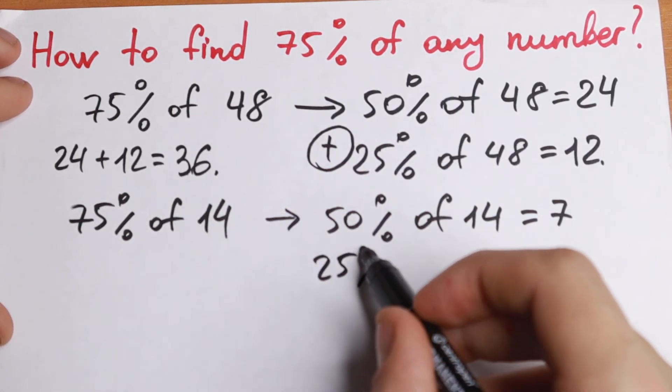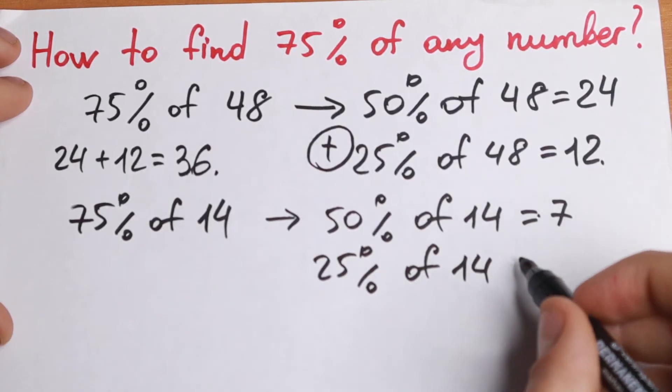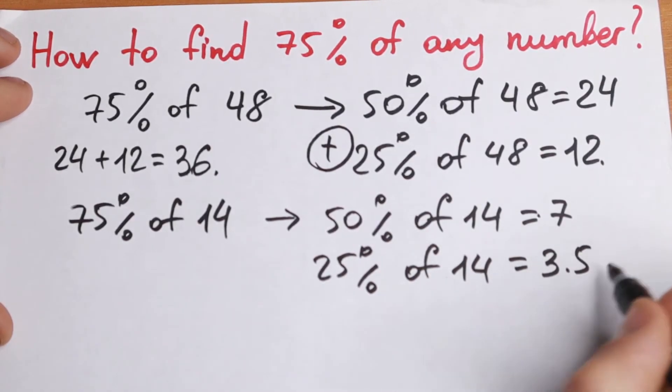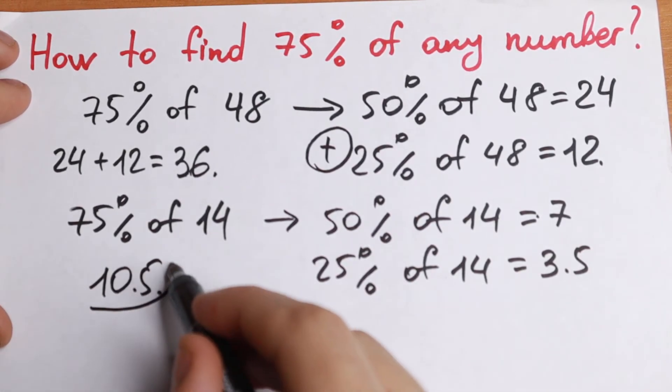And 25%, this is a half of this, of this 7. So this will be equal to 3.5. And if we add this, we will have that this will be equal to 10.5.